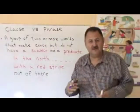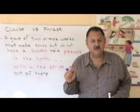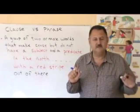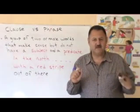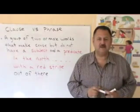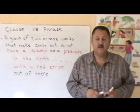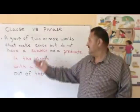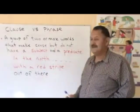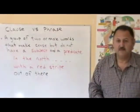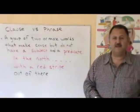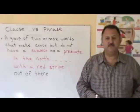A clause has a subject and a predicate — it's a group of words with a subject and a predicate. But a phrase is a group of two or more words that make sense, but these words do not have a subject and a predicate.